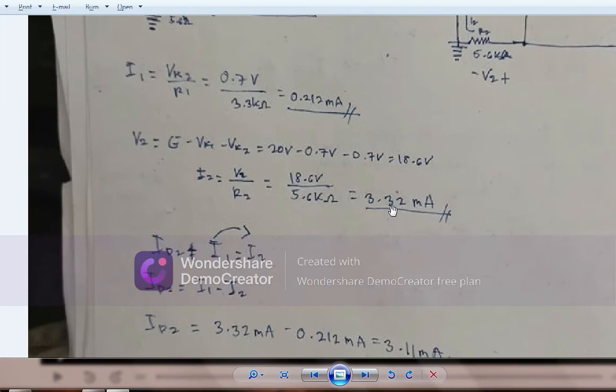And lastly, we need to identify id2. Since we already have i1 and i2, the formula of id2 is id2 plus i1 equals i2.